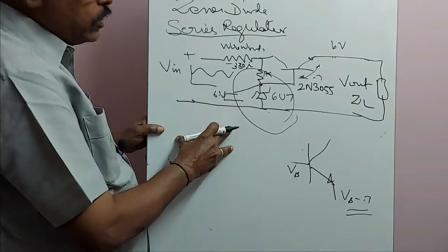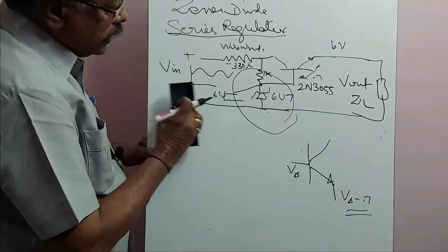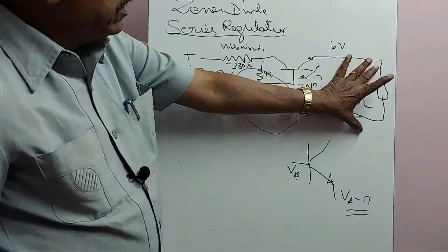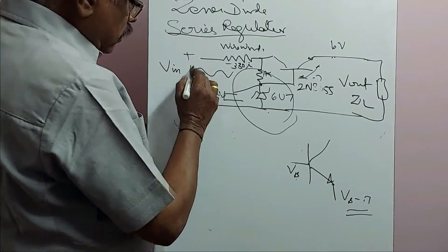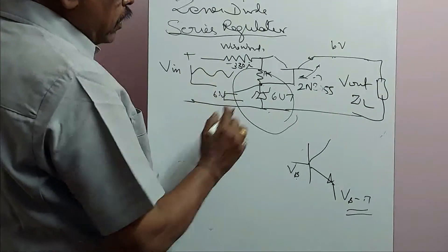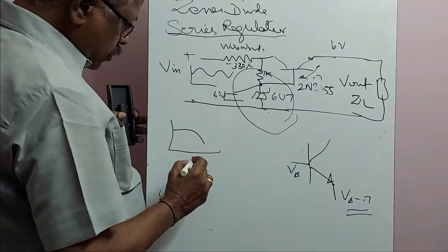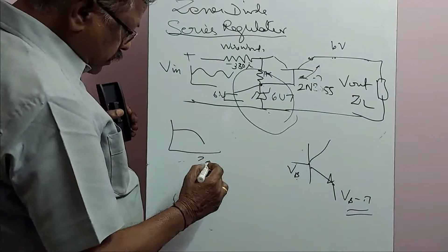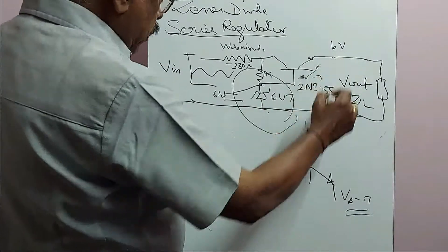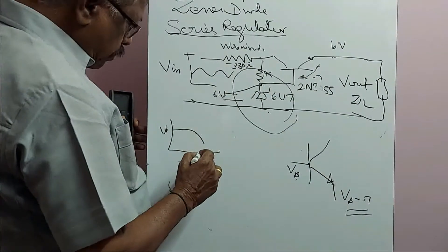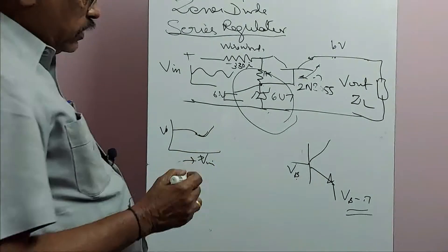This type of circuit is called a series regulator, and it has input and output characteristics. Input variation is not transferred directly to the output. We can plot output voltage with respect to Vin — this is the input characteristic. Beyond a certain input voltage, the output may increase or come down, and the regulator loses its regulation efficiency. Beyond that point, you cannot use this regulator.